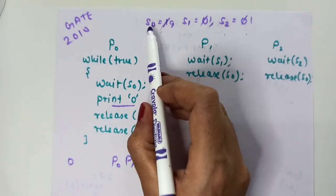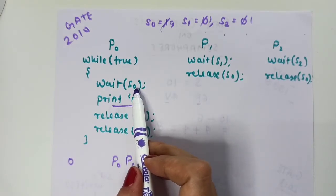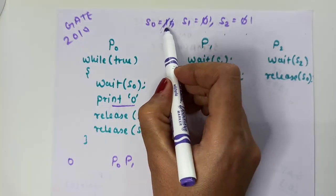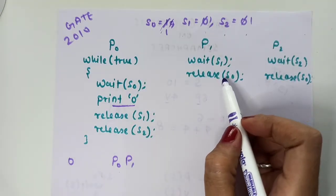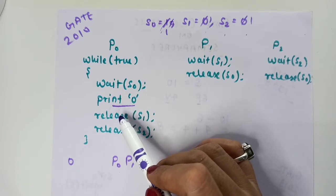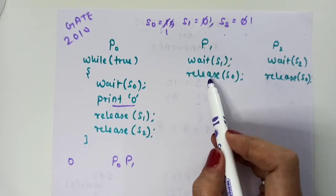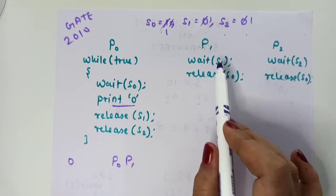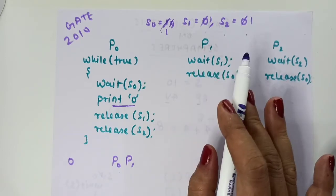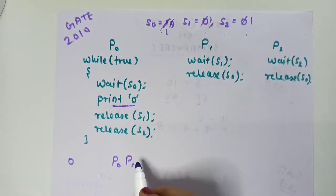When P0 completes its iteration, it releases S0 (signal operation), incrementing it back to 1. So P0 can come back when it gets a chance again. Now when P1 executes its two statements, it terminates. Then process P2 gets a chance.